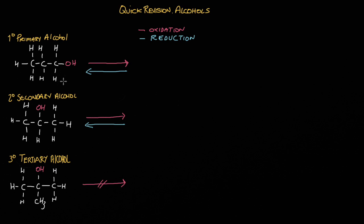With a primary alcohol you need to locate the functional group, which is the OH group. Once you've located the functional group you need to look at the carbon to which it is attached. You need to count how many carbons this carbon is directly attached to. It's directly attached to a hydrogen, a hydrogen, and just one single carbon, which makes this a primary alcohol.